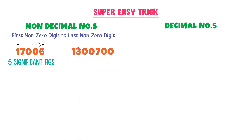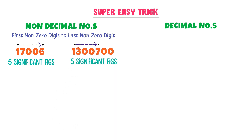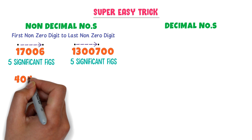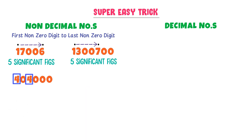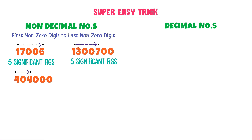Consider another number where the first digit is 1 and the last non-zero digit is 7. Go from 1 to 7 — counting 1, 2, 3, 4, 5 — there are five significant figures. Consider a third number where the first non-zero digit is 4 and the last non-zero digit is also 4. Going from this 4 to this 4 — 1, 2, 3 — there are three significant figures present in this number.